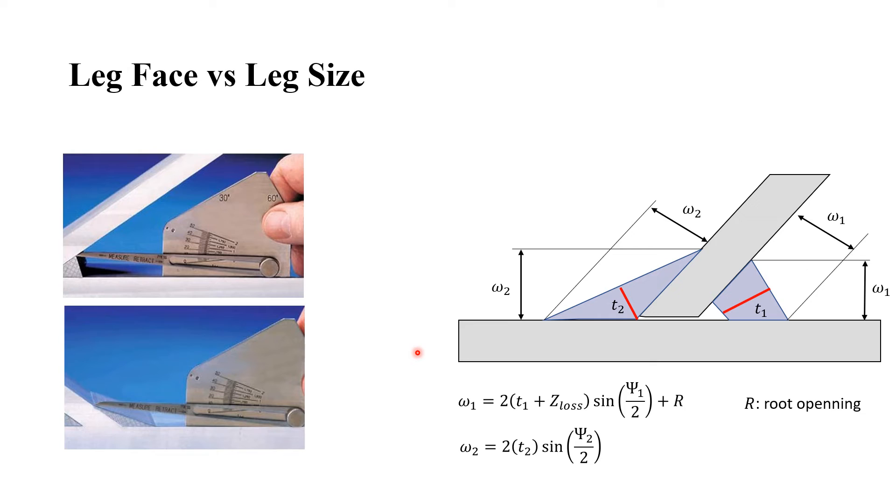On the right, we have the equations we must use in order to calculate the leg size. It considers the z-loss and the root opening for the smaller angle, and the effective throat and the dihedral angle for the other side.